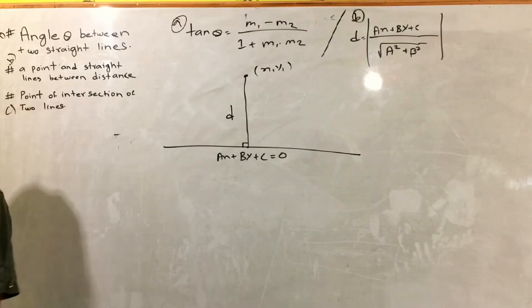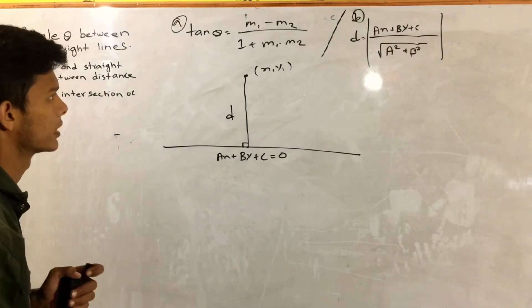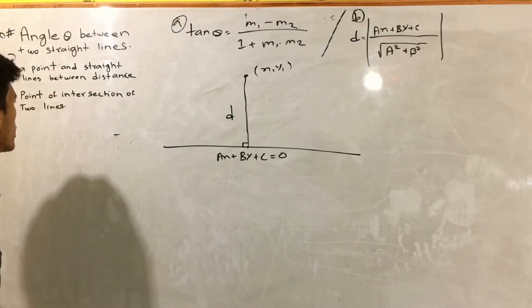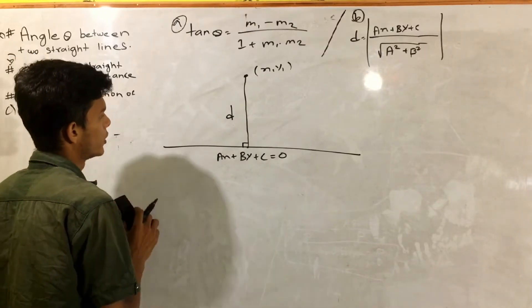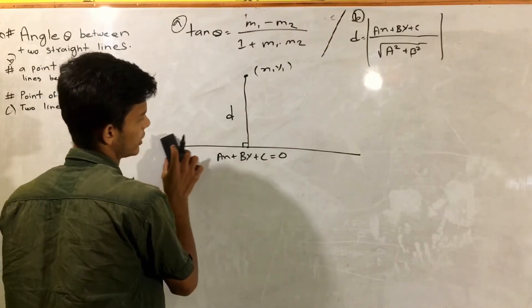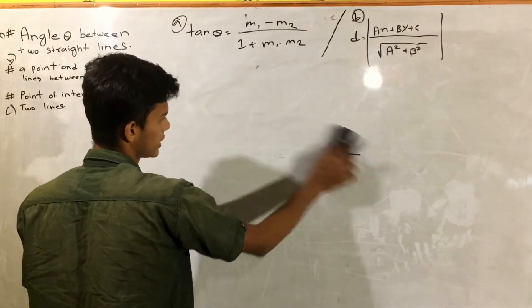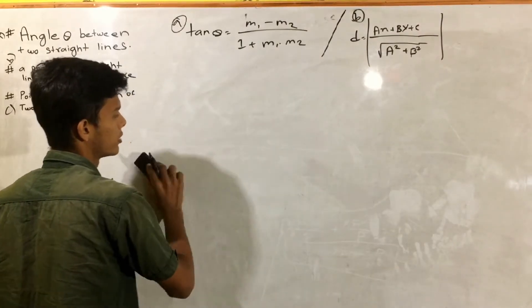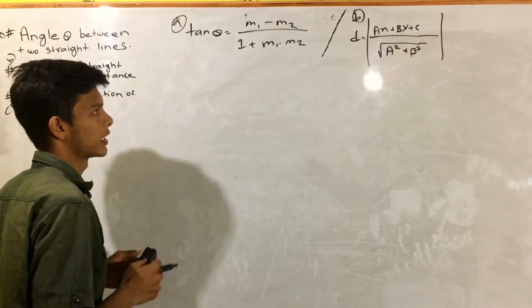Point of intersection. Point of intersection of two lines. Intersect point of intersection of two lines.